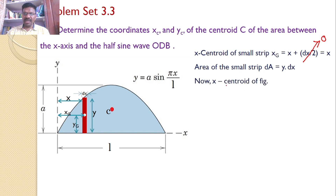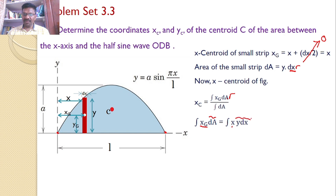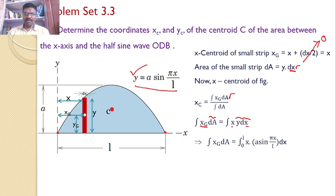From the basic fundamentals, the x-centroid of the figure xc = ∫xg·dA / ∫dA. Let us first calculate ∫xg·dA. That equals ∫xg·y·dx, where xg = x, and the x limits vary from 0 to l. So we integrate from 0 to l: x·a·sin(πx/l)·dx.